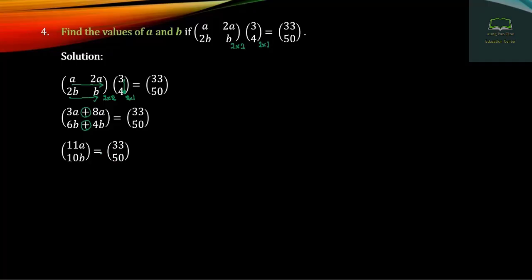And the second row is 1B and 2B. The second row is 1B. The second row is 3B.